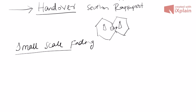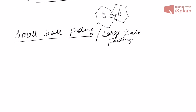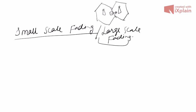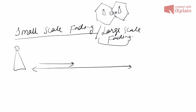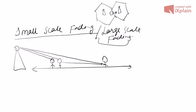Let me explain small-scale versus large-scale fading effects. Large-scale fading effects are prominent when you significantly move away from the base station. Suppose you move just a short distance — the signal won't seem much weaker — but when you cover a large distance, the signal from the base station will definitely be weaker.